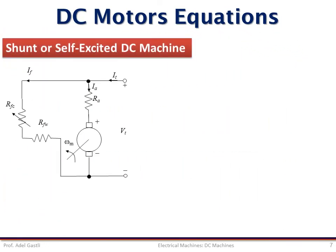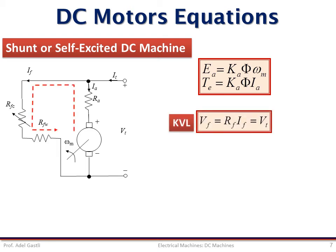For the shunt and self-excited DC machine, the equivalent circuit is as shown here. The standard back EMF and torque equations are the same. The KVL applied to the field circuit gives this equation, which is very similar to the previous case, but here the field voltage VF is the same as the armature terminal voltage VT.